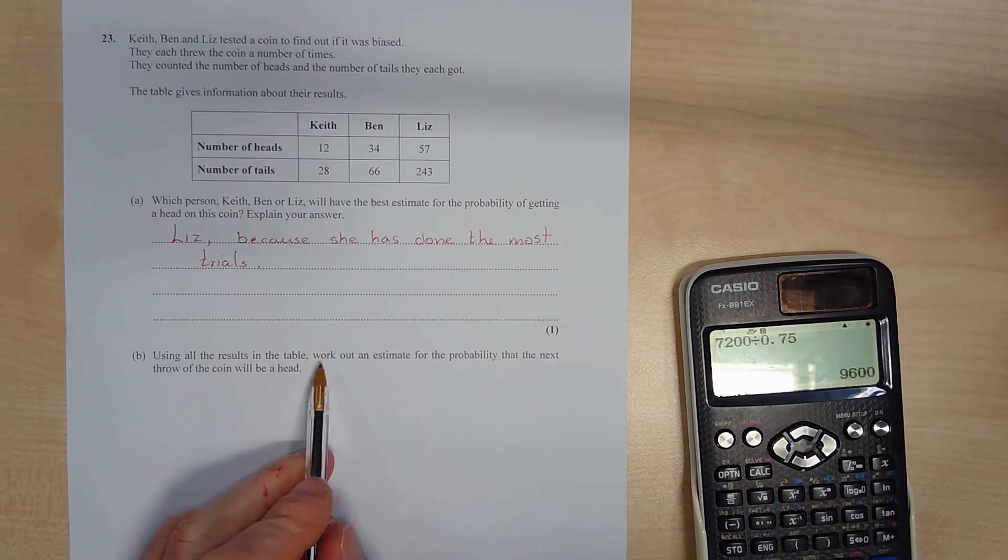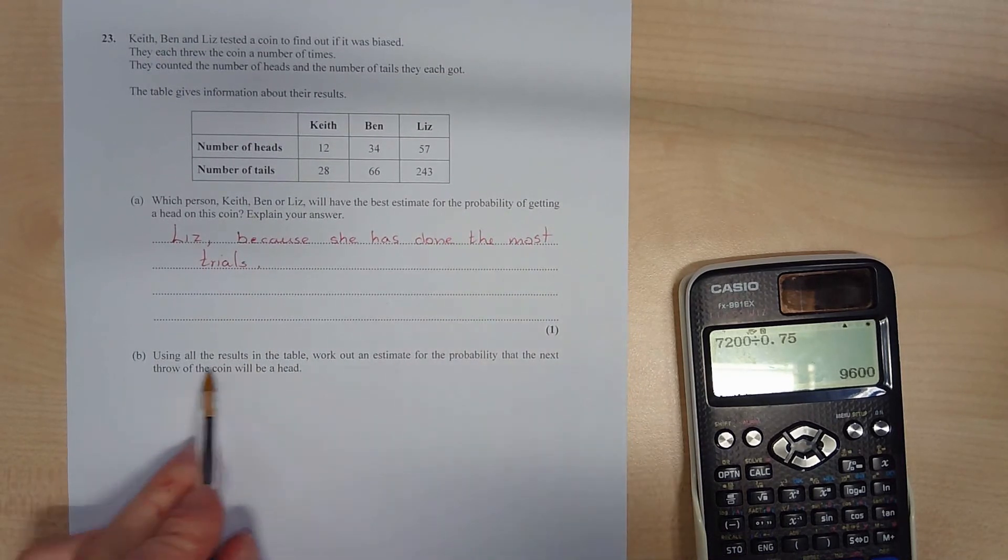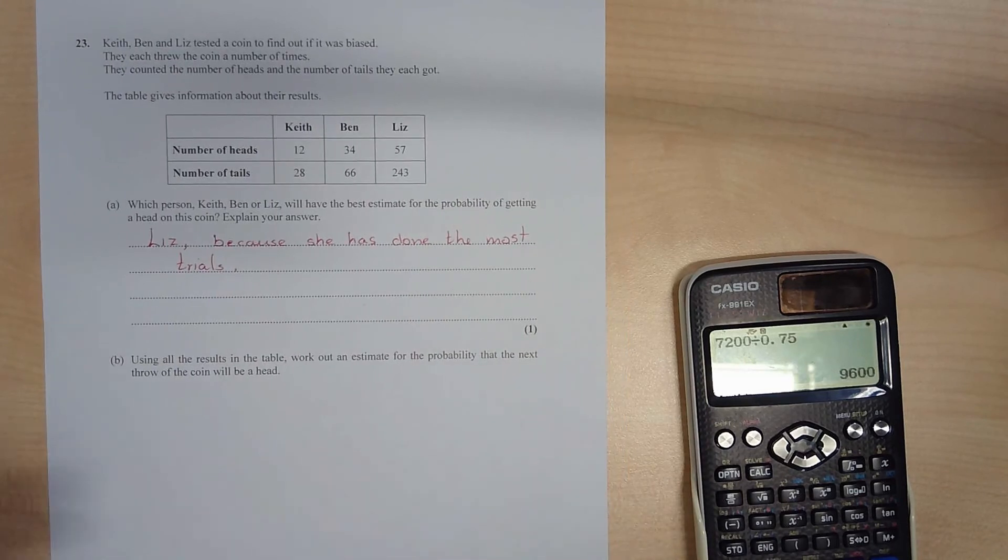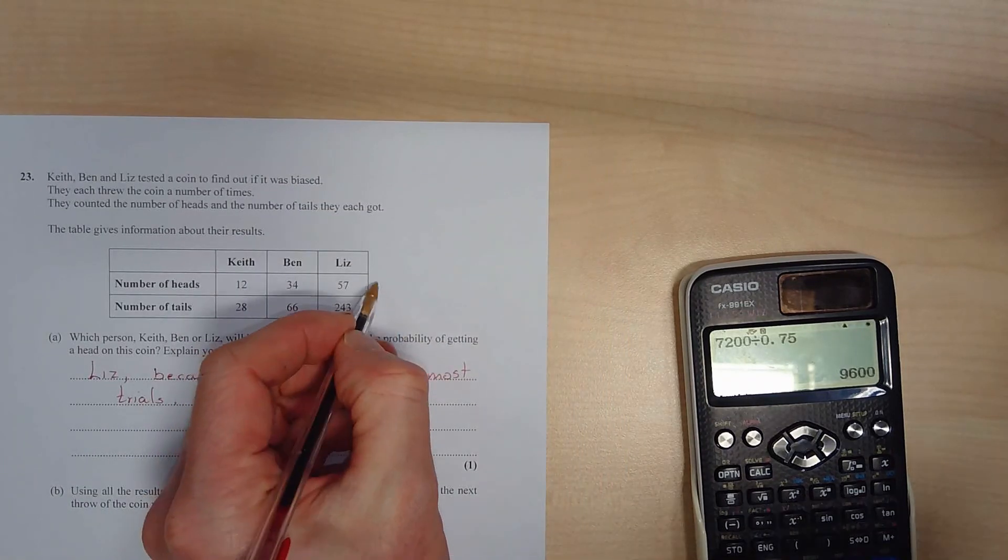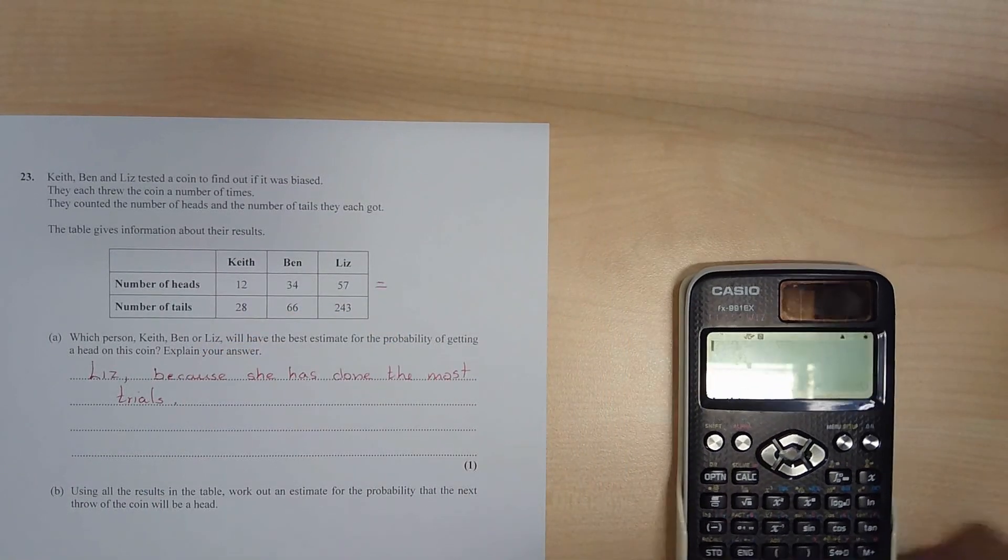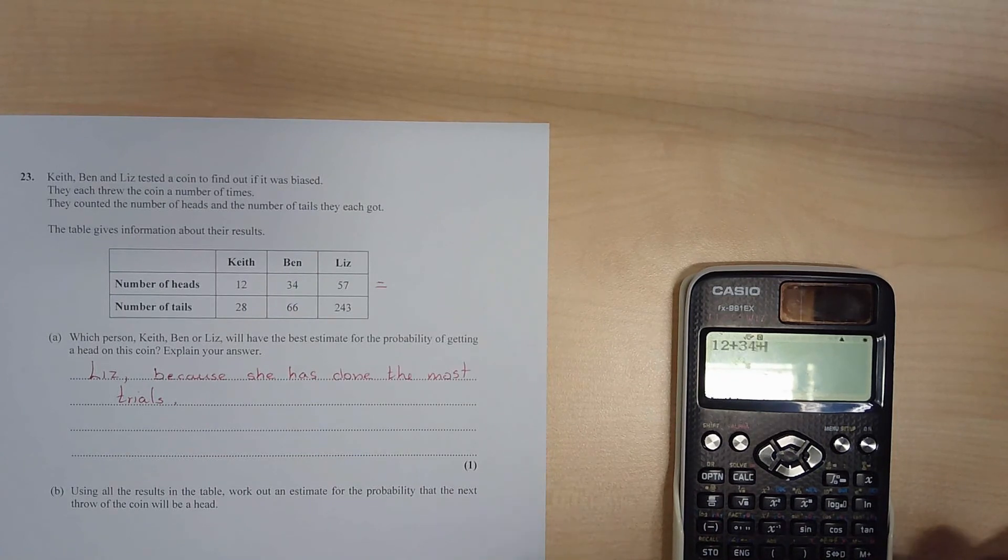And so using all the results, work out an estimate for the probability that the next will be heads. So we need to see how many of these have been heads. So we need this total: 12 plus 34 plus 57.